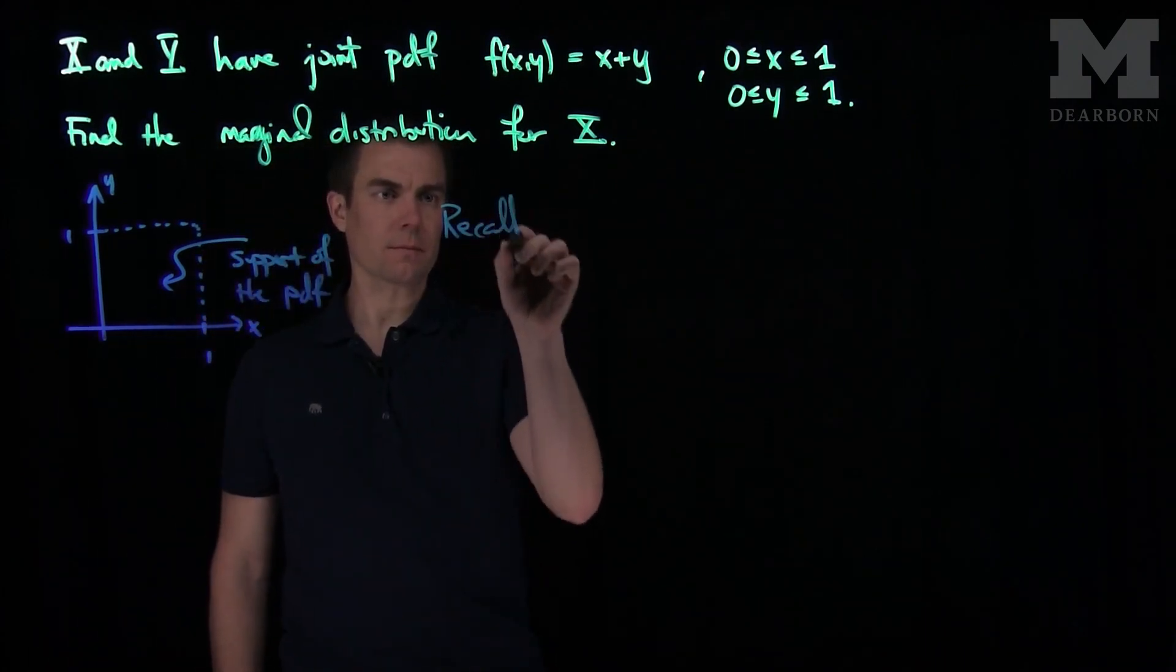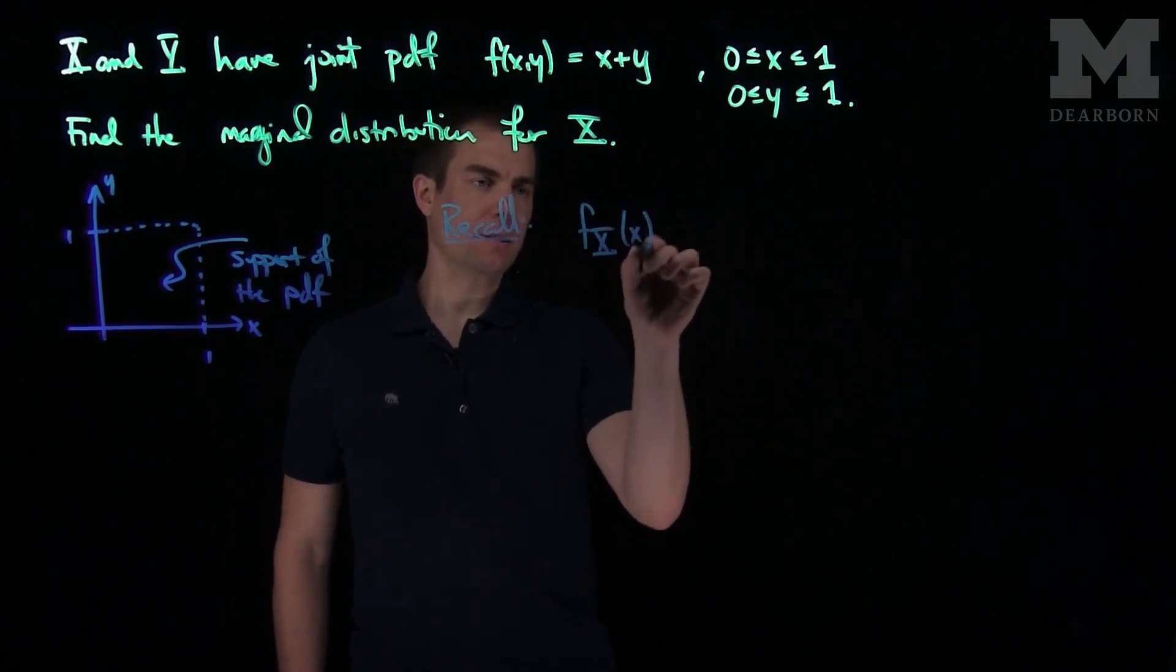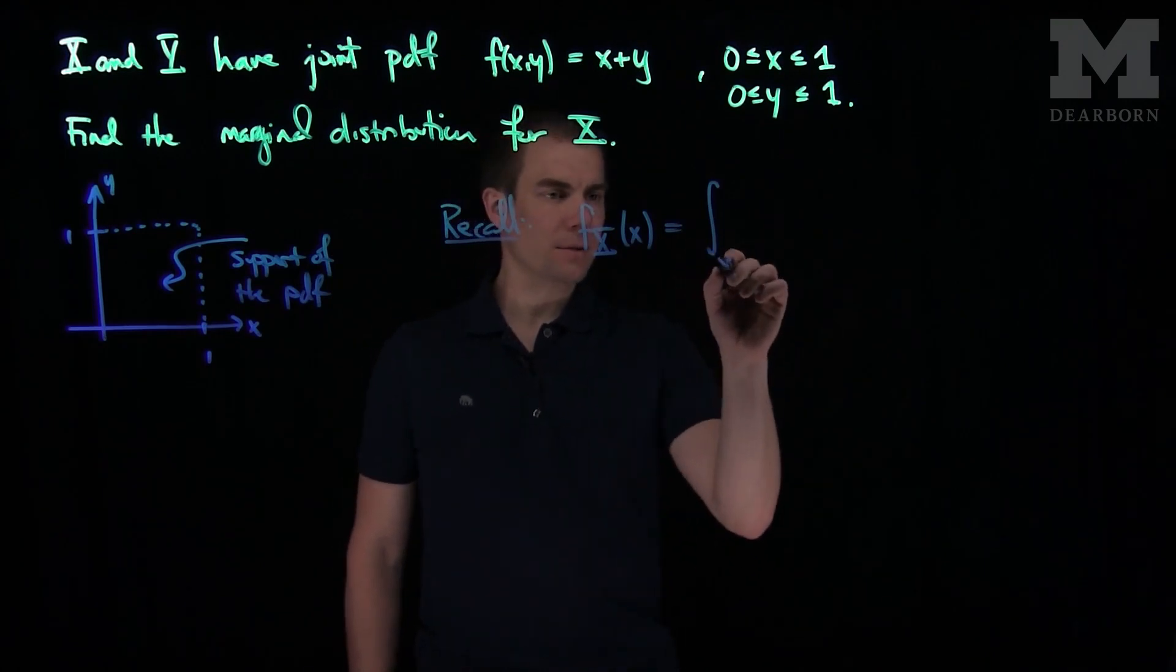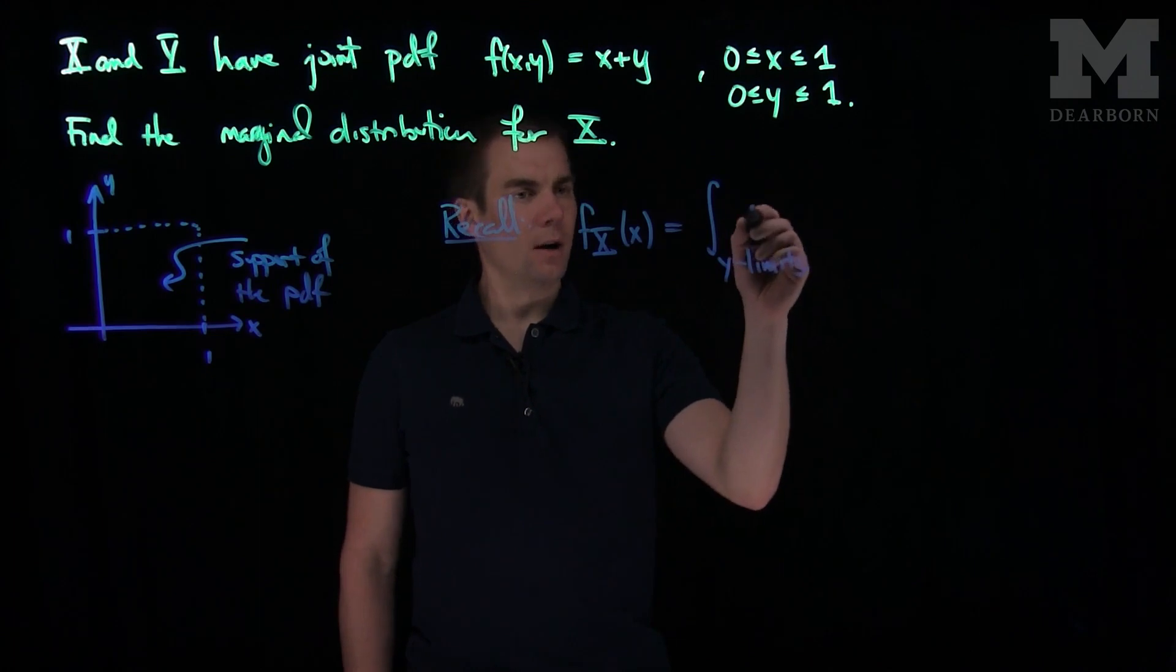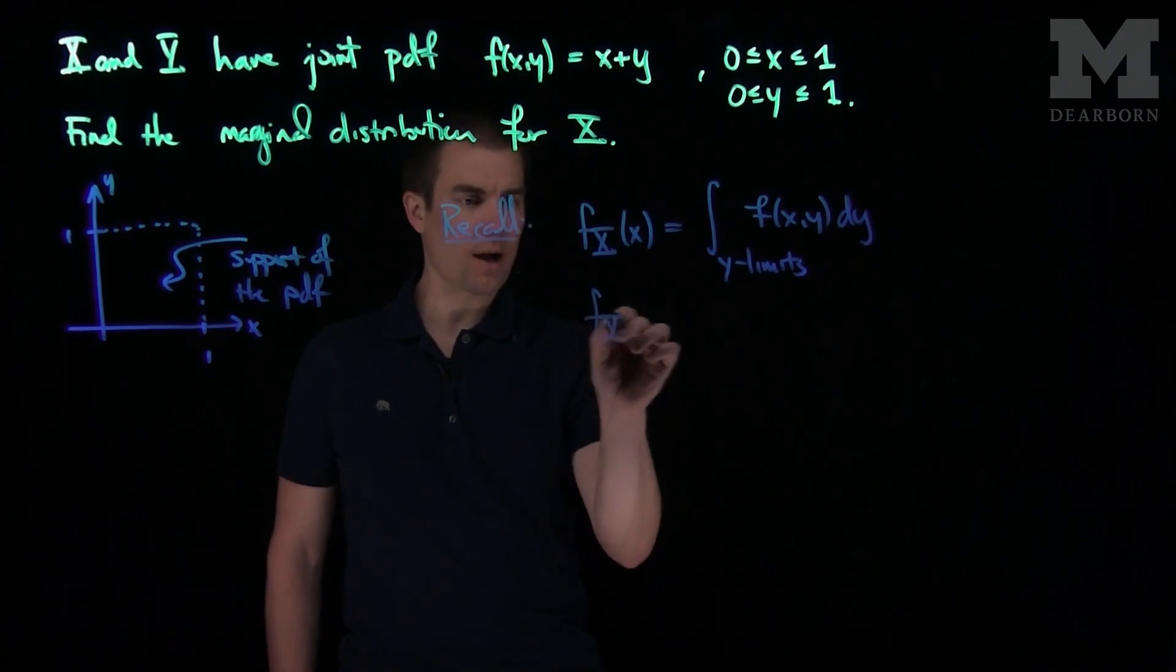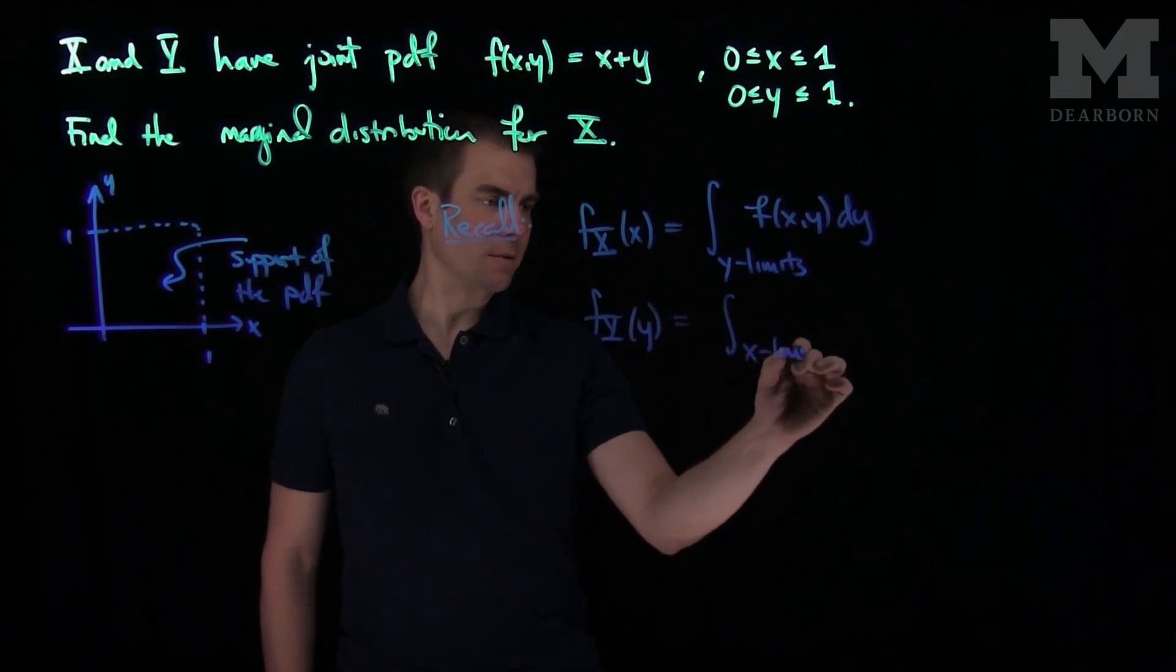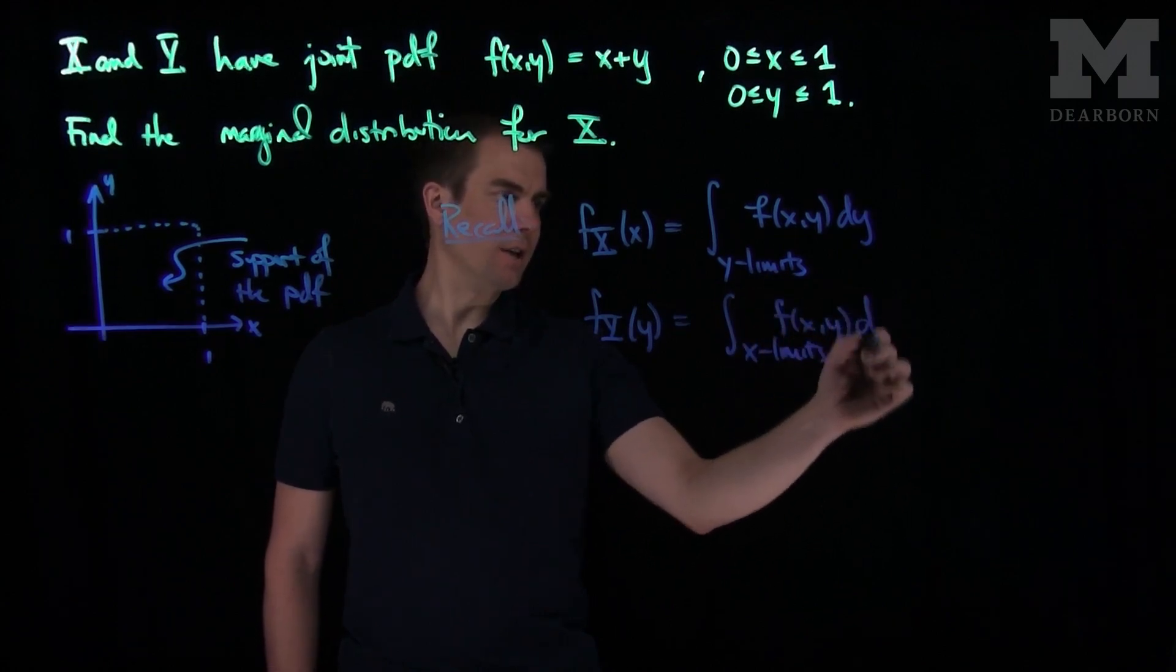Recall that f_x(x) is the integral over all the y limits in your range of the joint pdf, f(x,y) dy. And f_y(y) is the integral over the x limits of integration of f(x,y) dx.